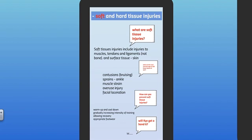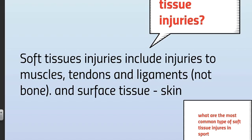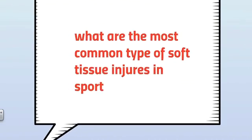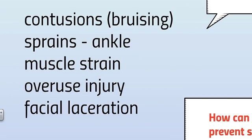Soft and hard tissue injury is the next dash point. Starting with soft tissue — what are soft tissue injuries? Soft tissue injuries include injuries to muscles, tendons, and ligaments. It's important to note they are not bones, and surface tissue injuries such as a skin laceration are also included. The most common types of soft tissue injuries in sport include contusions (commonly known as bruising), sprains, muscle strains such as a hamstring tear, overuse injuries, and a facial laceration or facial cut.